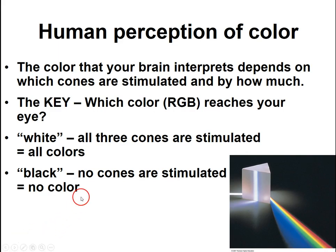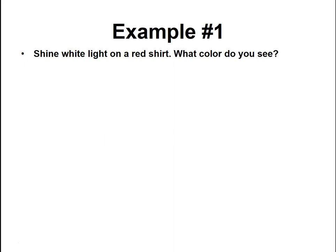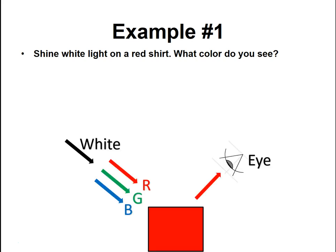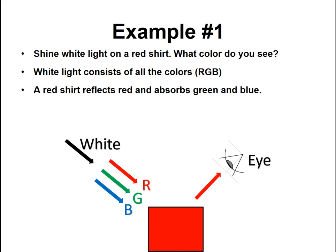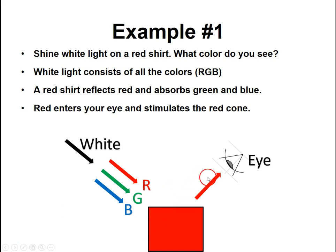Let's do a few examples. The key is figuring out which color reaches your eye. Example one: we shine white light on a red shirt — what color do you see? Hopefully it's obvious you'd see red, but I want you to understand the logic. White is not really a color; it's a combination of colors — for our purposes, red, green, and blue. When you shine all of those onto the red shirt, the red shirt reflects red light and absorbs green and blue. So red enters your eye, stimulates the red cone, and therefore you interpret that as red.